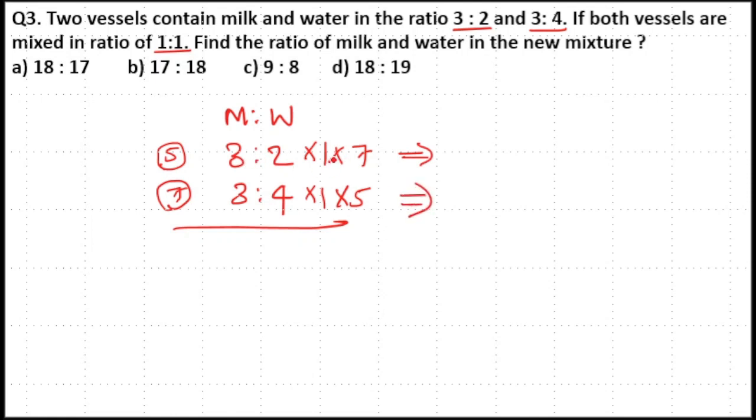So 3×7, 1×7=7, 3×7=21, 2×7=14, 3×5=15, 4×5=20.